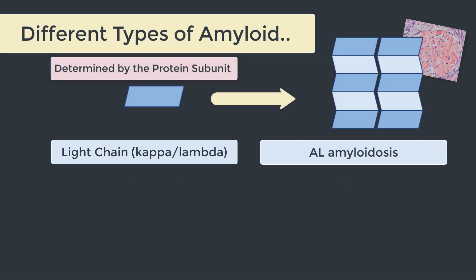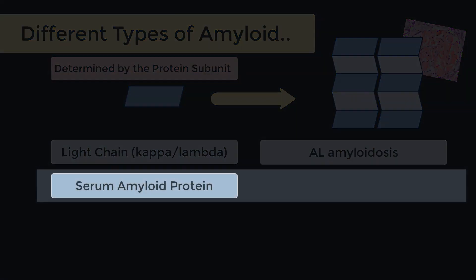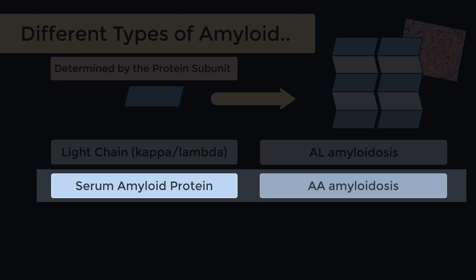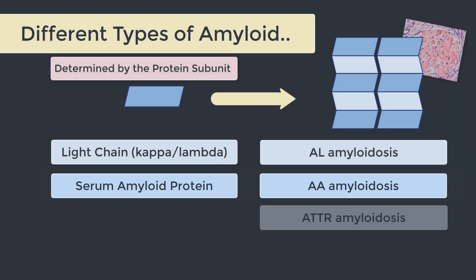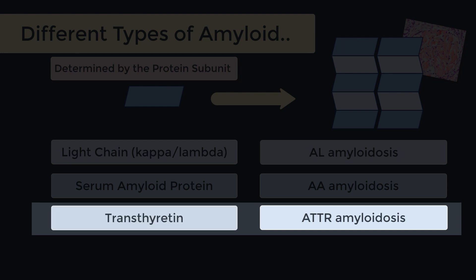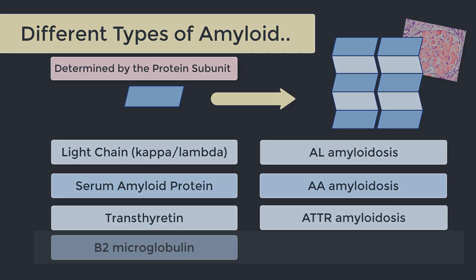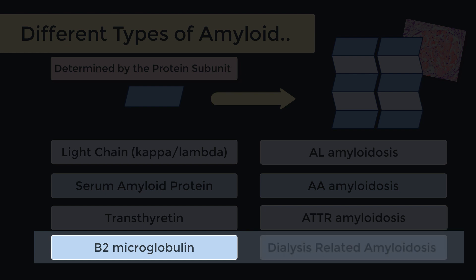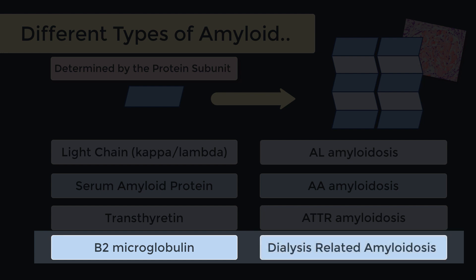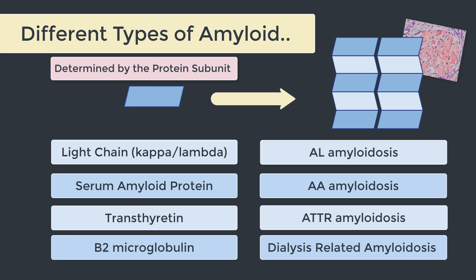Another protein which can lead to systemic amyloidosis is serum amyloid protein — an acute phase reactant which can lead to AA amyloidosis, a type of amyloidosis seen in people with autoimmune disease or chronic infections. ATTR amyloid is due to a protein known as transthyretin, and beta-2 microglobulin is the protein associated with dialysis-related amyloidosis. So lock in those causes of systemic amyloidosis for MCQs in your future.